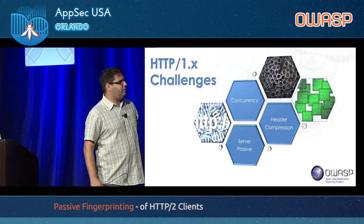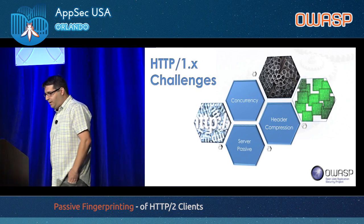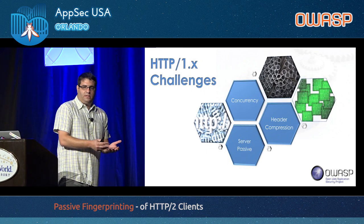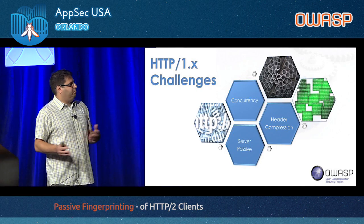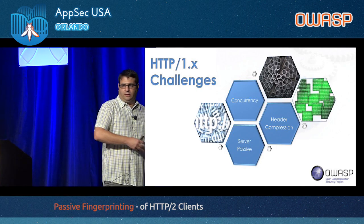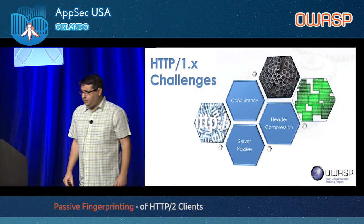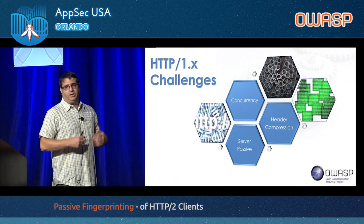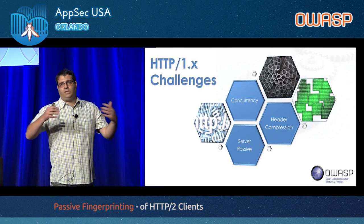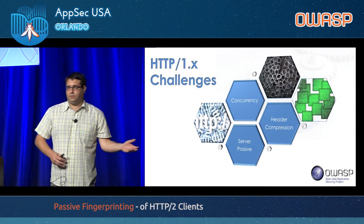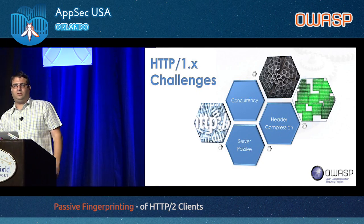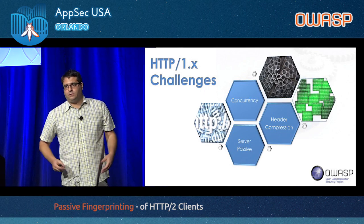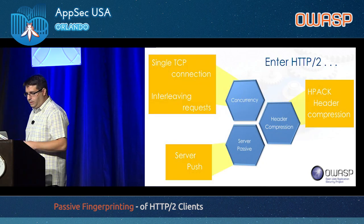Lastly, the server is passive in HTTP/1, meaning it cannot initiate sending data without the client asking first. If you think about it, when your browser requests an HTML page, it renders it and in 99% of cases generates requests for static content — CSS, JavaScript, images. So why should the server wait for the browser to get the response, parse it, and then do the request? That was one of the key challenges in HTTP/1.